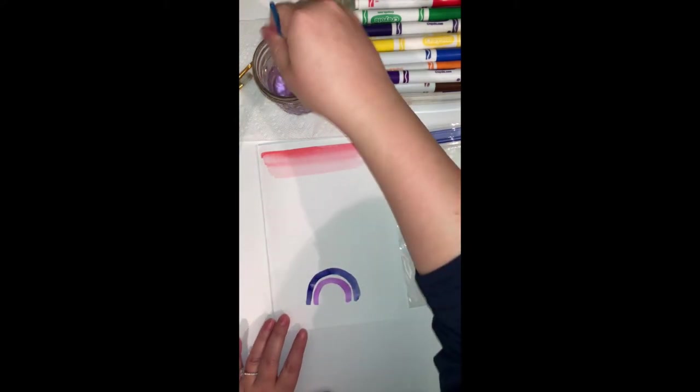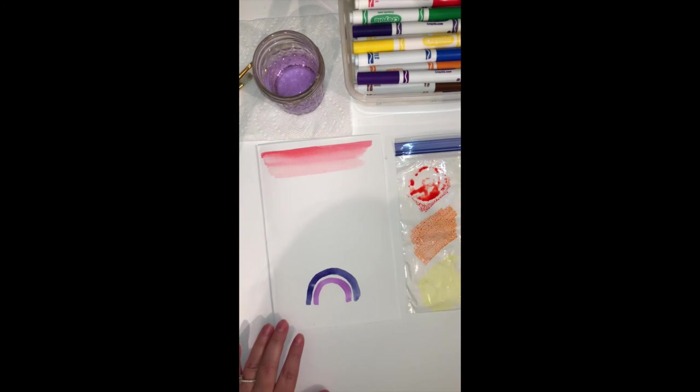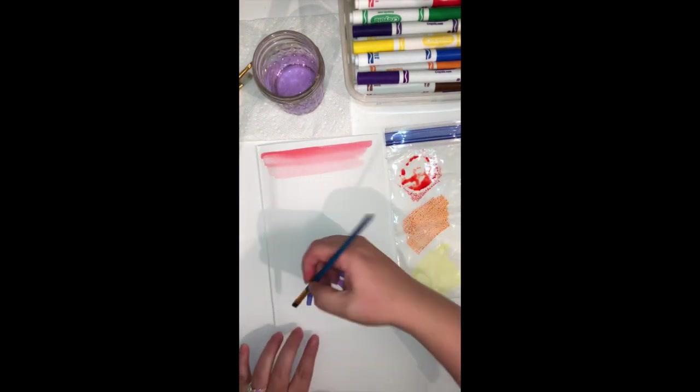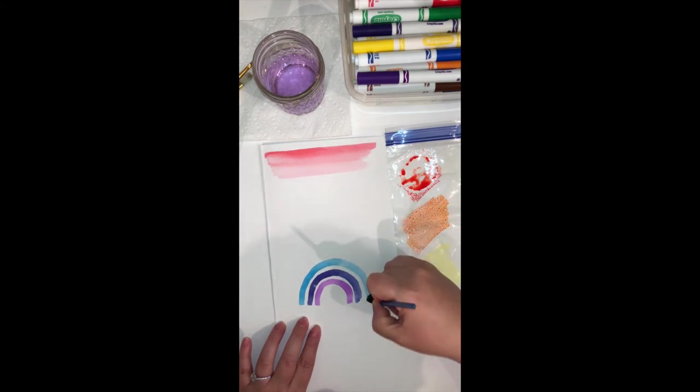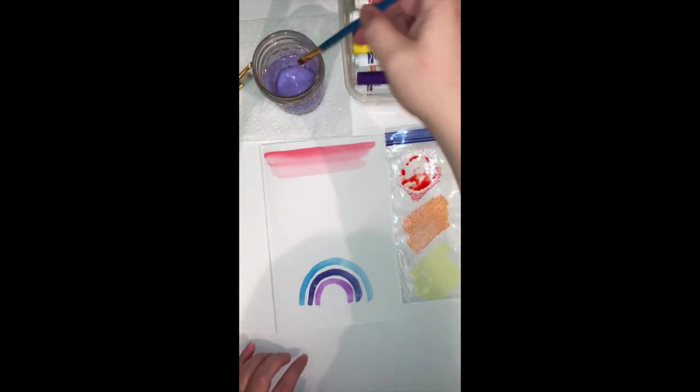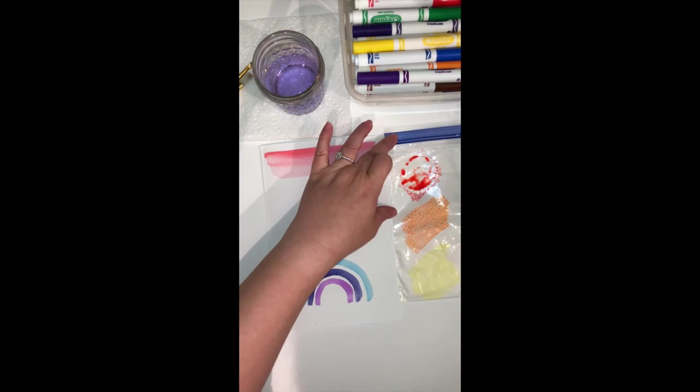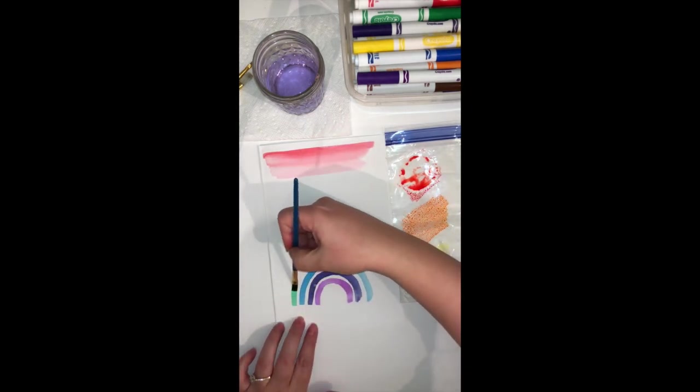And every time I switch colors, I'm going back to my water cup. I'm swirling my brush around, and then I'm swiping that extra water off on the edge of the cup. You don't want your paintbrush to be too wet because that'll make your colors really watery.